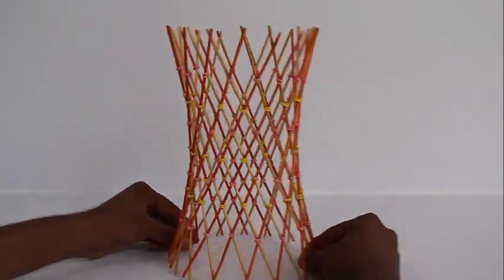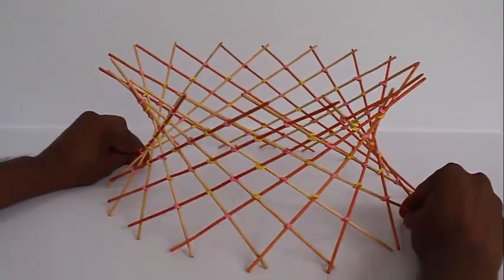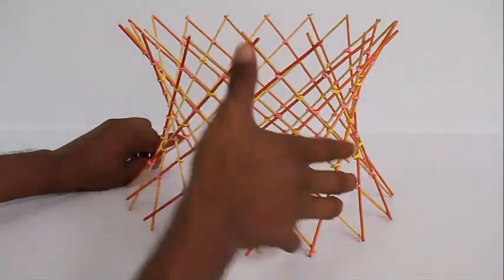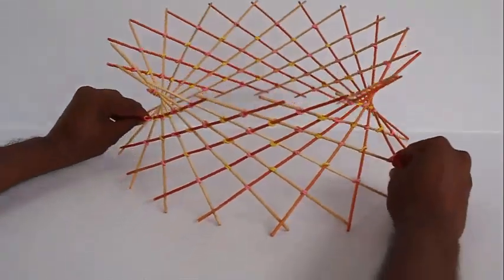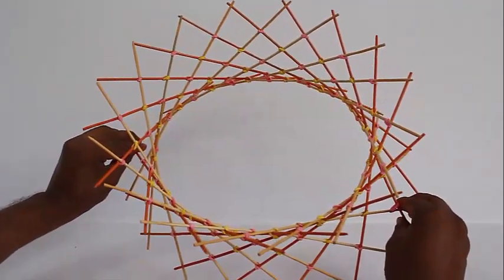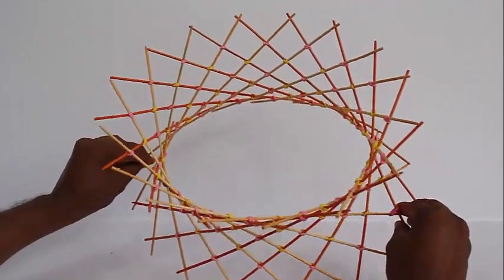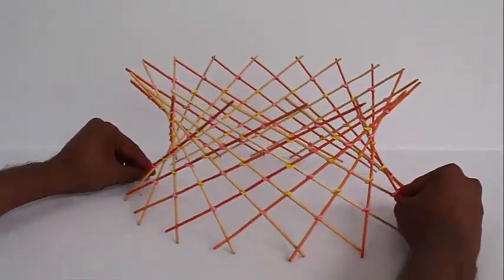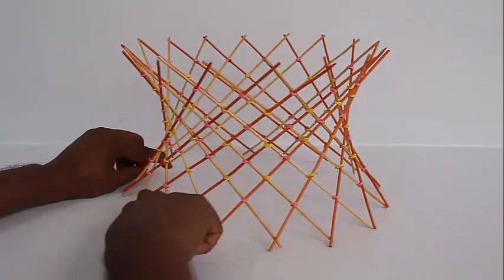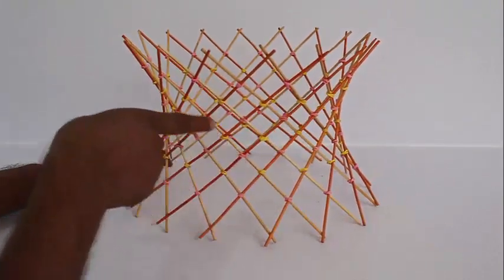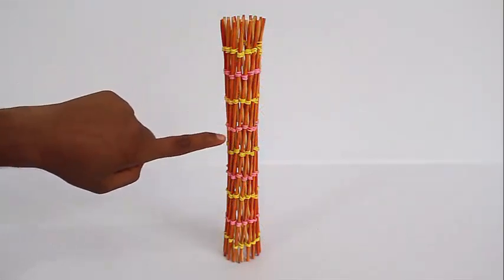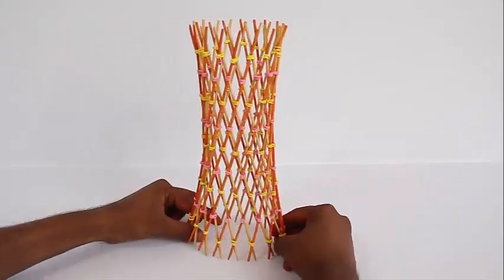Now it can expand and also contract because the rubber bands would provide a kind of a restoring force and it looks extremely pretty. And you can see that there is a hyperbolic curvature to the right and the left side. This structure is made of straight sticks and here is a trellis with nine rubber bands.